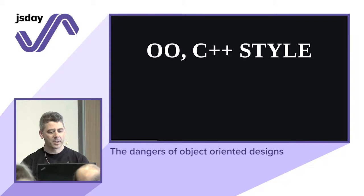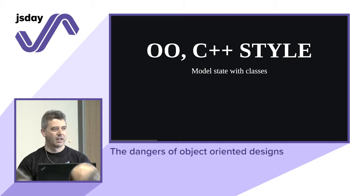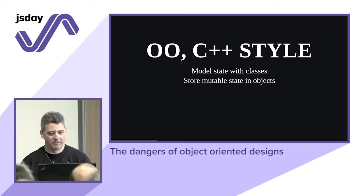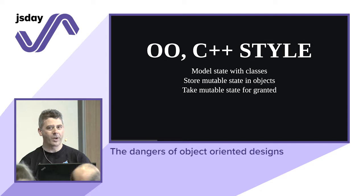In C++ style, what we do is model state with classes. You have a program, you need to store state somewhere — names, ages, whatever values — and the first thing you do is define a class and put the state inside. This state is mutable. The whole point of OOP as practiced is to teach you how to store mutable state inside objects. We take it completely for granted that state must be mutable.